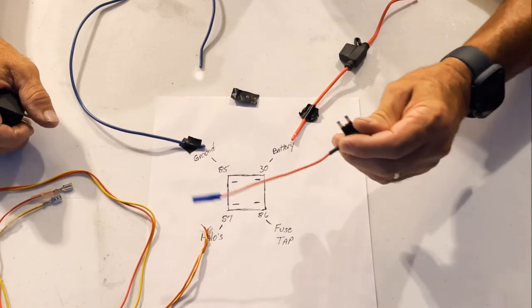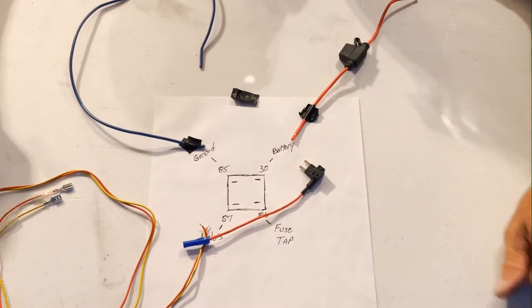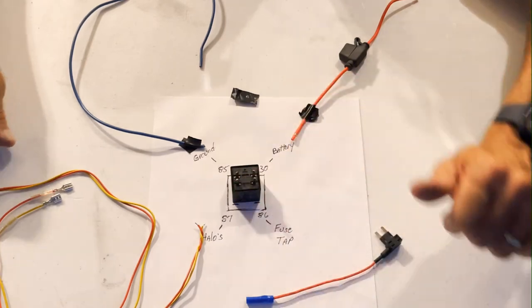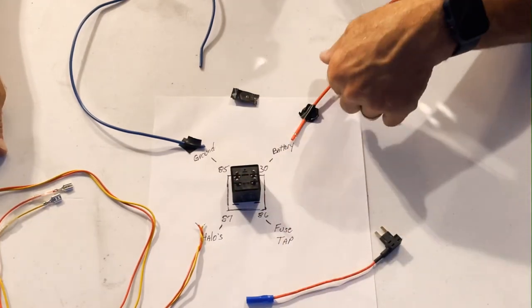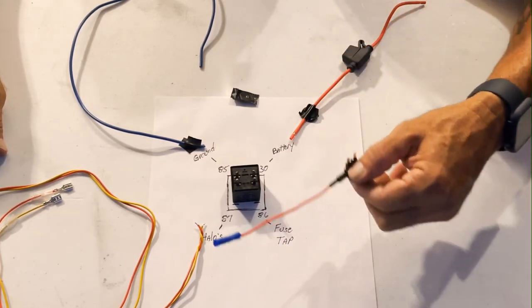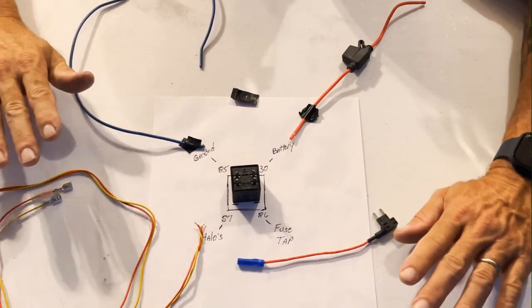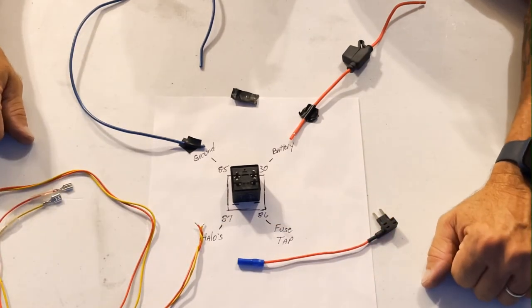The improper way is fuse tap right into your halos and forget all that. A four pin relay costs about 15 bucks. You're looking at a few bucks for an inline fuse and a few bucks for a fuse tap. But that's the proper way to do your halos or anything that you add to your vehicle.